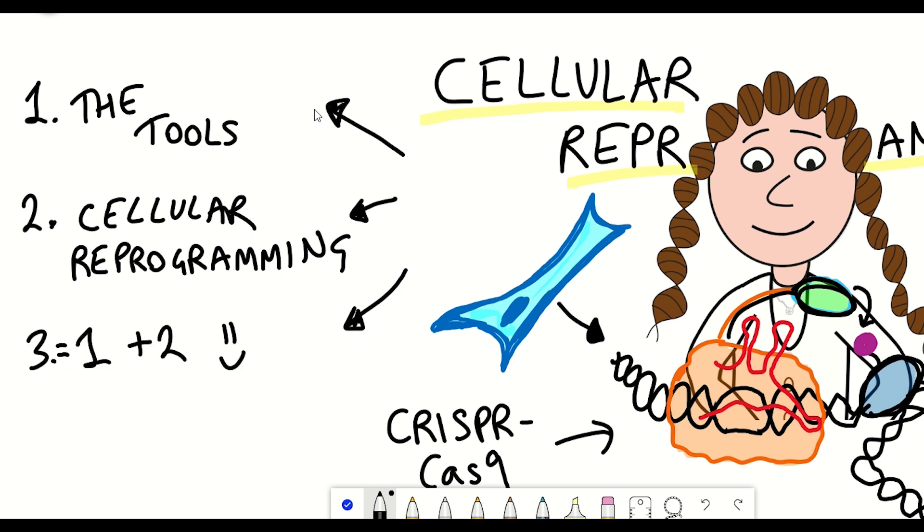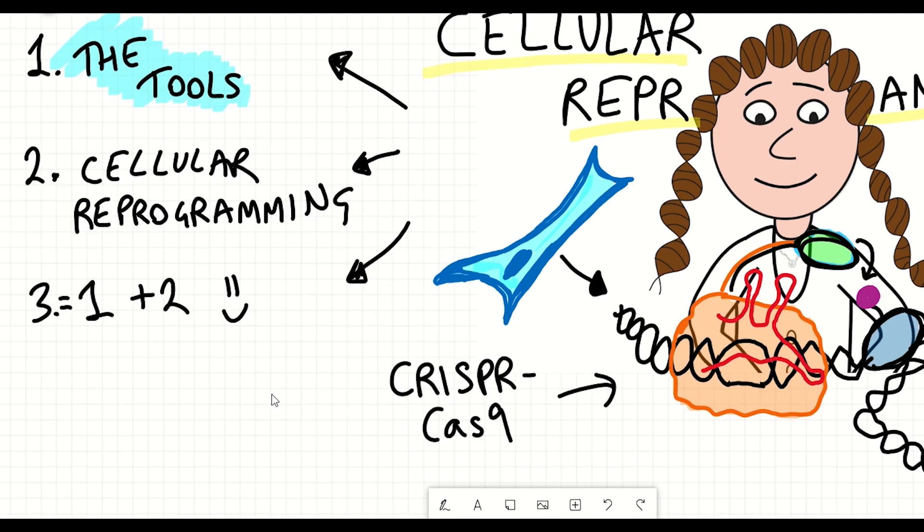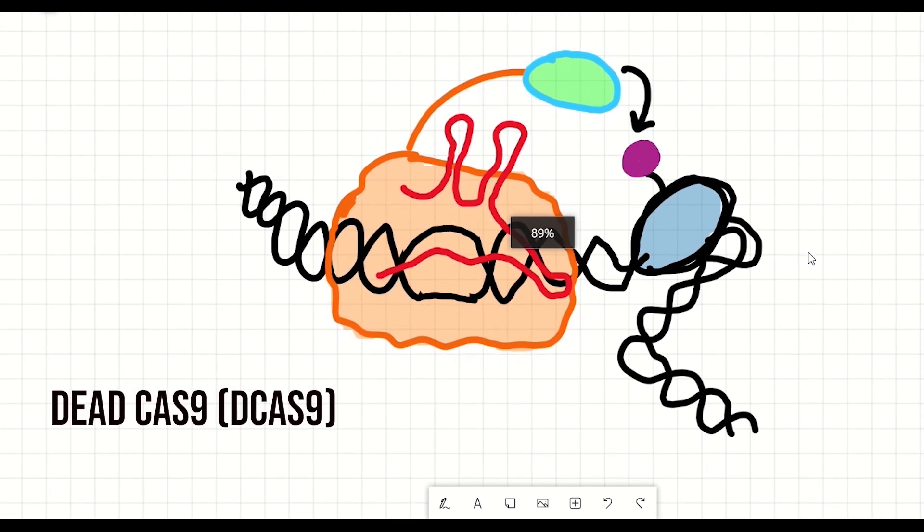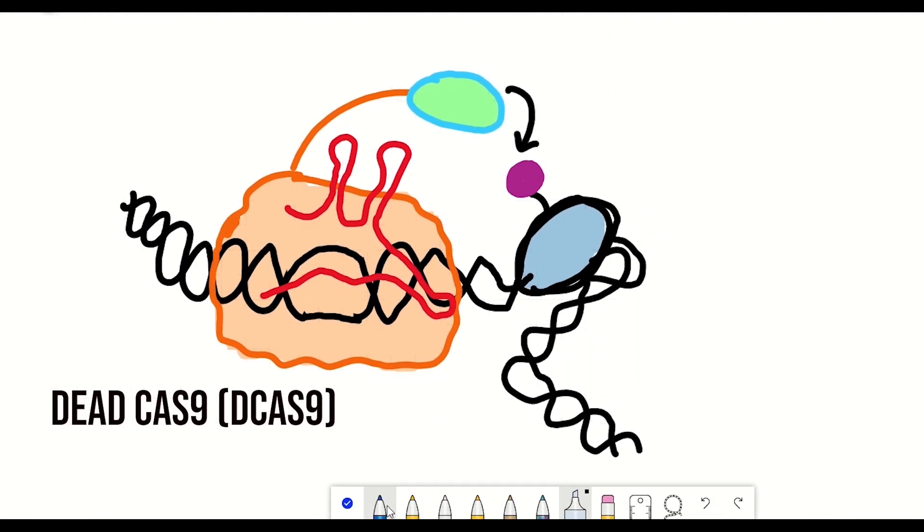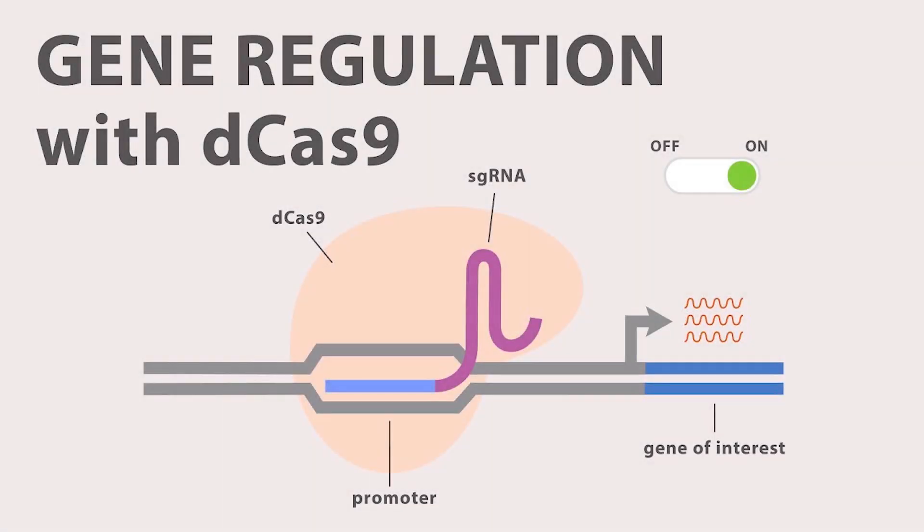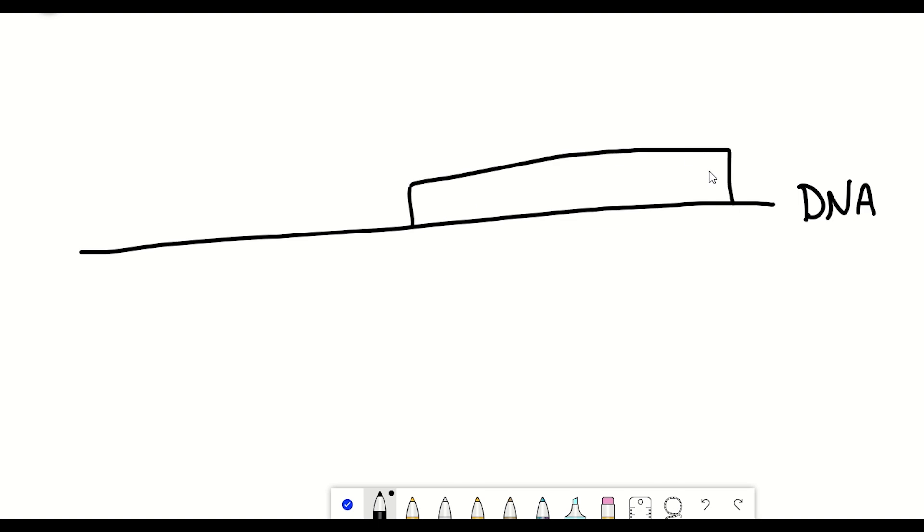So as with the epigenome editing approaches, these transcriptional modifiers also work by using dead Cas9, that is a Cas9 protein that has been mutated such that it doesn't cut DNA, but it retains the ability to get directed to DNA sites through its guide RNA-DNA interaction. And so if you want to activate a gene, the sites chosen, based on previous work, seem to be regions near to the transcriptional start site.